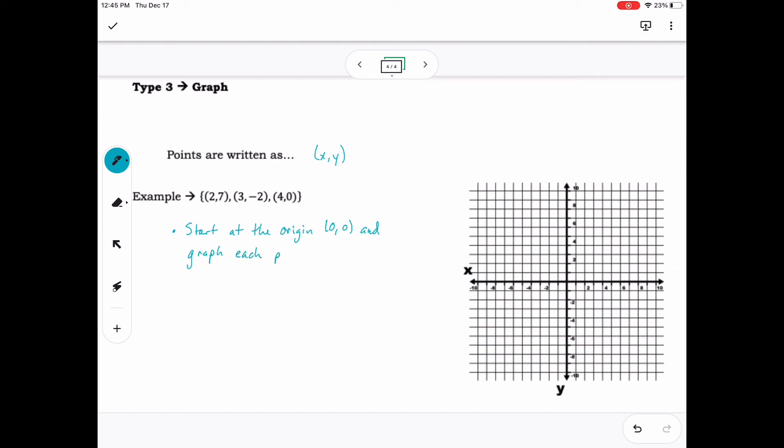Remember that when we start at the origin, going right is a positive x value, going left is a negative x value, going up is a positive y value, and going down is a negative y value. Don't forget to label your points.